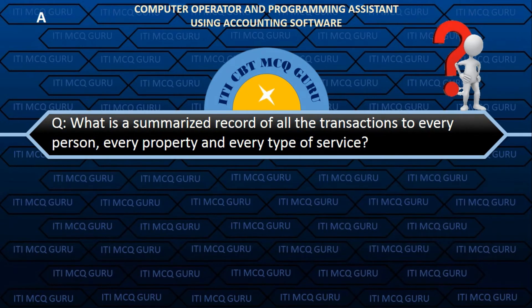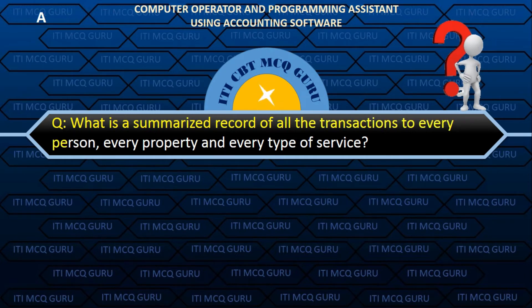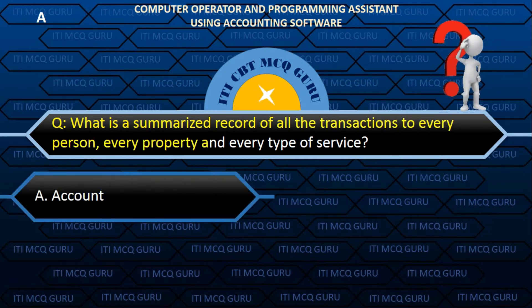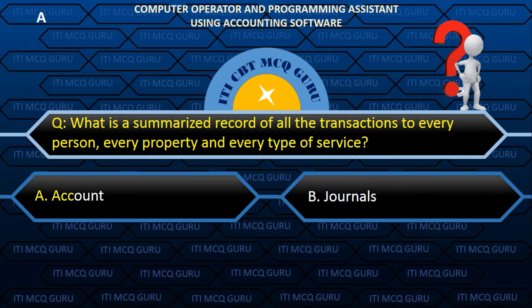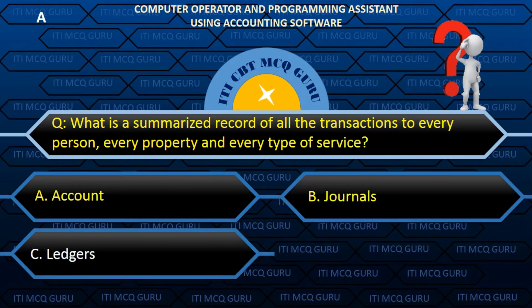What is the summarized record of all the transactions to every person, every property, and every type of service? A. Account.